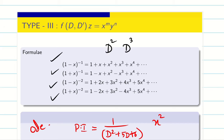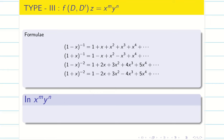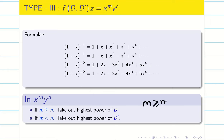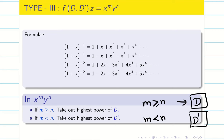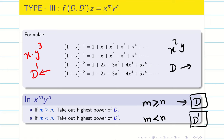Now, here in this chapter, we have both x power m into y power n. So in this case, we should be very careful. If m is greater than or equal to n, I can pull d outside. If m is less than n, I can pull d dash outside — then only it is easy to solve the problem. So if it is x square y, you take the highest derivative of d outside from the denominator. If you get x into y cube, you should pull out the highest derivative of d dash. Then only you can solve the problem.